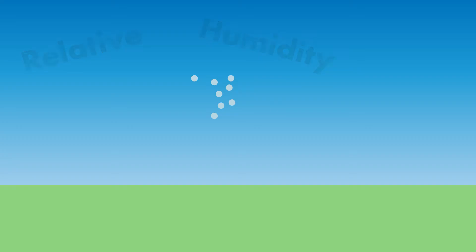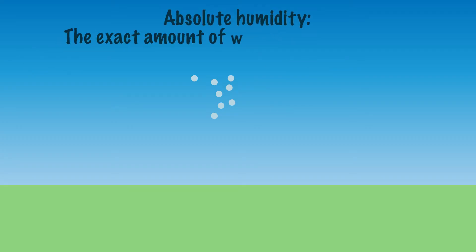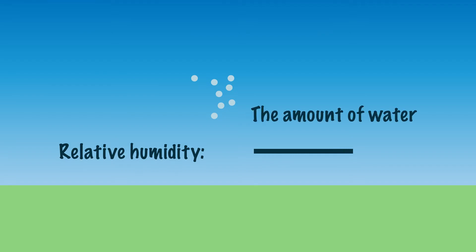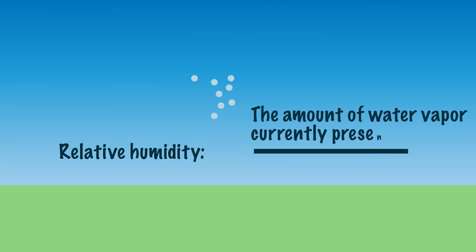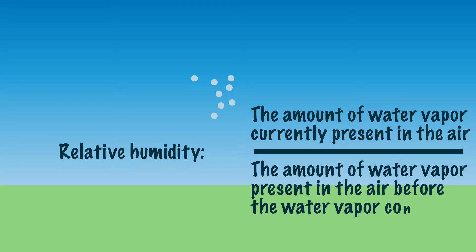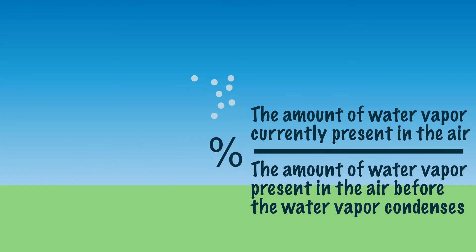The exact amount of water vapor in the air is the absolute humidity. However, this type of humidity is not the most important type. That is the relative humidity. This is the ratio between the amount of water vapor currently present in the air and the amount of water vapor present in the air before the water vapor condenses. This is expressed as a percentage.